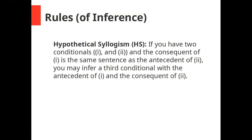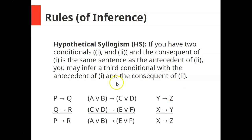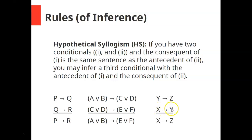Third is the rule of hypothetical syllogism, which says if you have two conditionals — call them one and two — and the consequent of one is the same sentence as the antecedent of two, you may infer a third conditional with the antecedent of one and the consequent of two. For example, if you have P then Q and Q then R, you're allowed to infer if P then R. In this case, if A or B then C or D, and if C or D then E or F, you can infer if A or B then E or F. And it doesn't matter what order they come in — if you have Y then Z and X then Y, you can still get if X then Z. That's hypothetical syllogism.